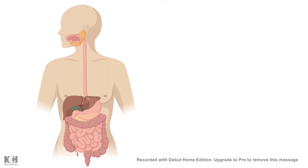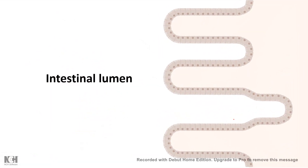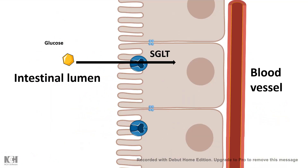Looking at our gut — in the intestinal epithelial cells, the cells are connected to each other by tight junctions. This ensures that whatever fluid, metabolites, or toxic substances are present in the intestinal lumen cannot simply move through the epithelial barrier into the blood vessels. Anything that needs to be absorbed in the intestine — like amino acids or glucose — must pass through specific transporters. For example, glucose must pass through SGLT, the sodium-dependent glucose transporter. Tight junctions ensure it cannot leak into the bloodstream but must go through a transporter.